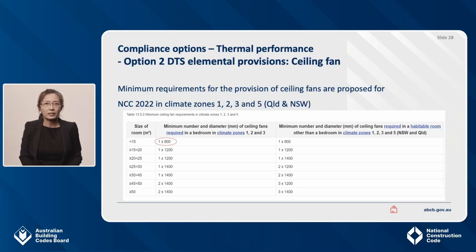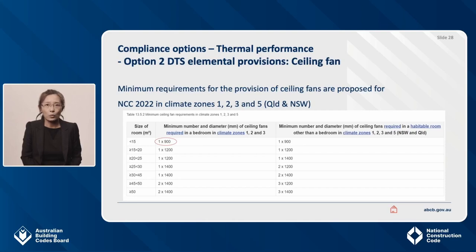Ceiling fans facilitate a significant reduction in the use of artificial cooling. The ceiling fan requirements have replaced the NCC 2019 requirements for air movement. In climate zones 1, 2, and 3, these requirements include both daytime and nighttime occupied spaces. In climate zone 5 — Queensland and New South Wales — ceiling fans are only required in daytime occupied spaces. Ceiling fans are not required in circulation spaces like hallways and entrance foyers. In climate zones 1, 2, and 3, a bedroom with an area less than 15 square metres requires a 900-millimetre ceiling fan.